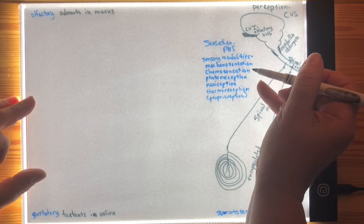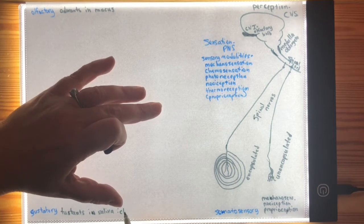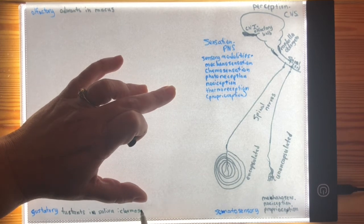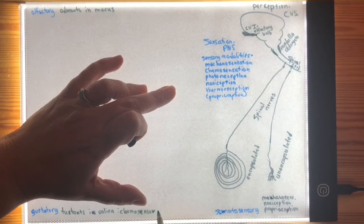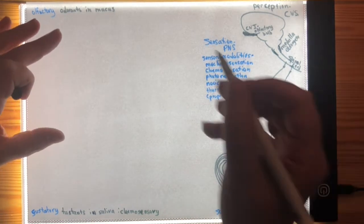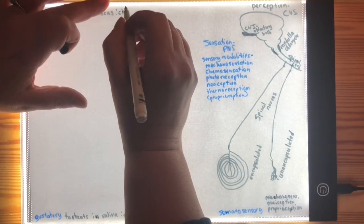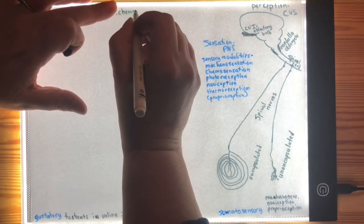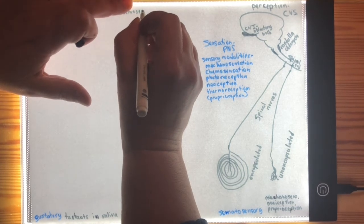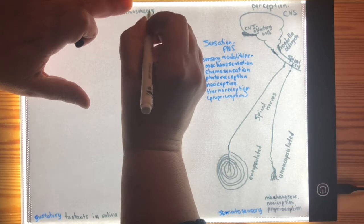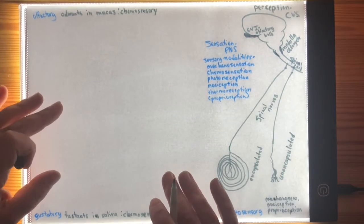So when you have a condition where you may not be producing enough saliva or enough mucus, your sense of taste or smell will be affected. Since tastants and odorants are technically chemicals, the sensory modality here is chemosensory — you have a chemical, a tastant or an odorant, binding to a receptor, and that is how these things are sensed.